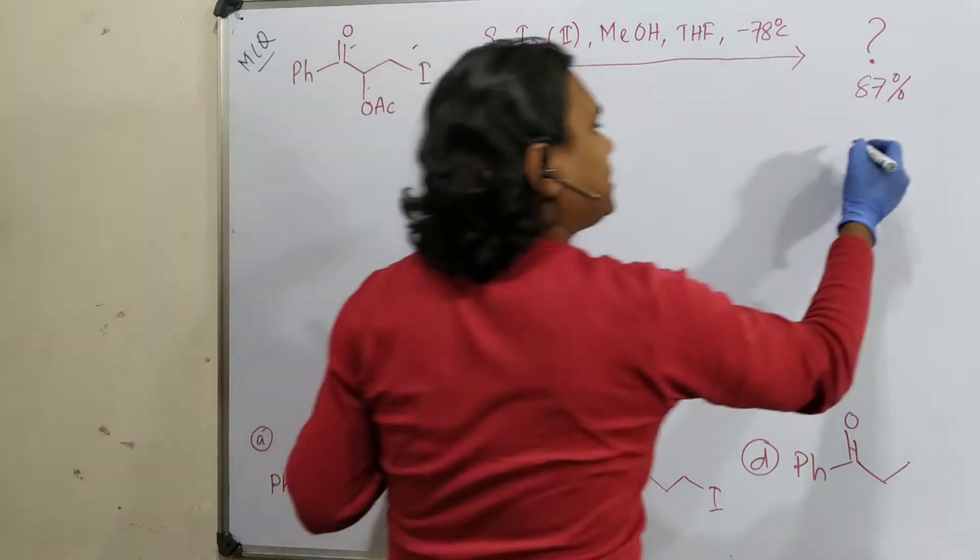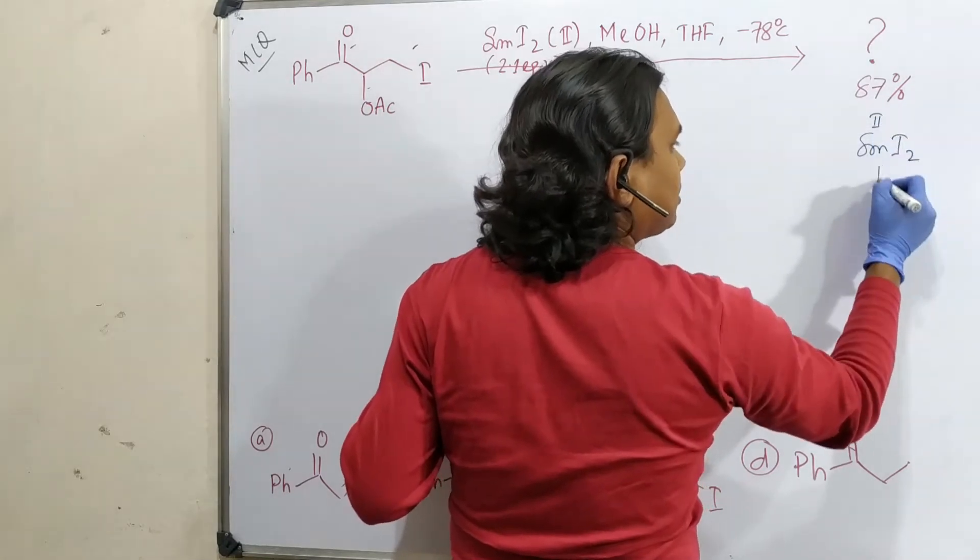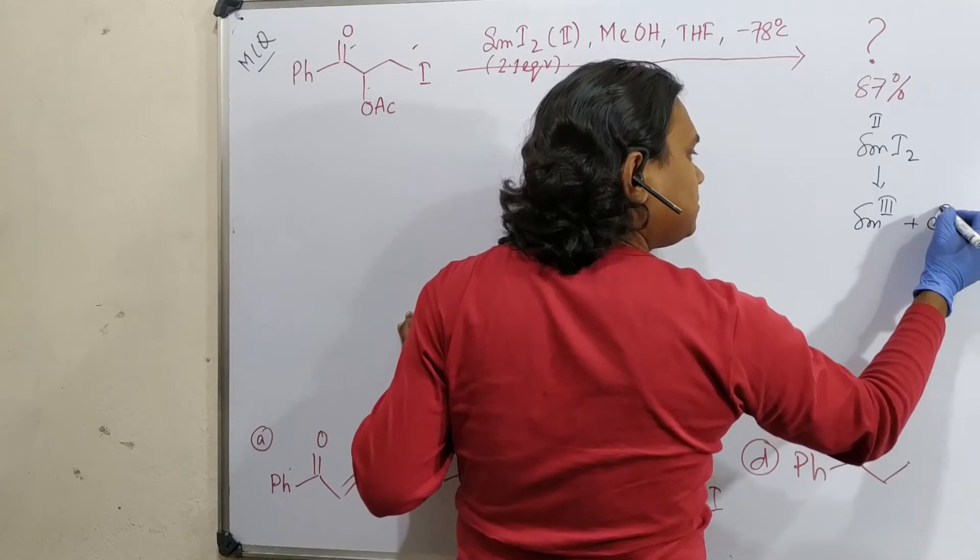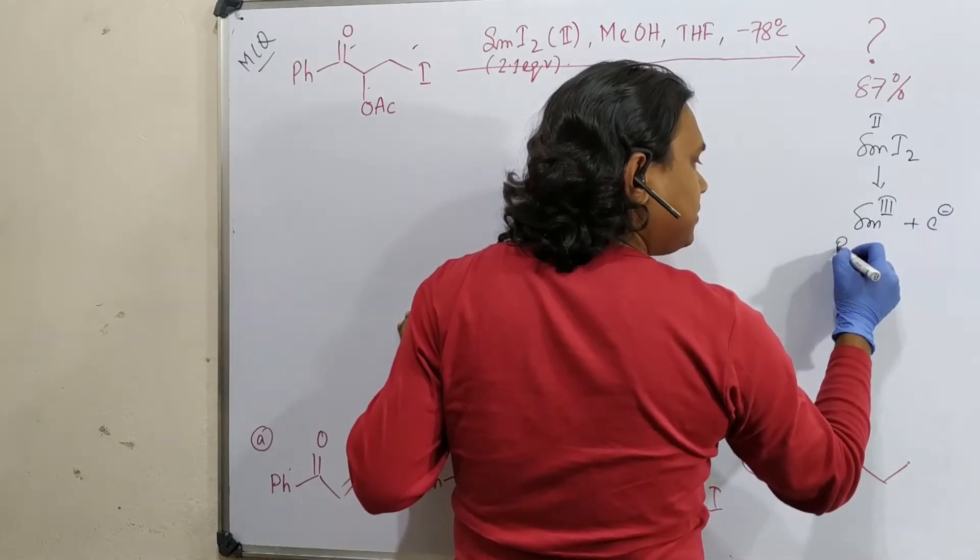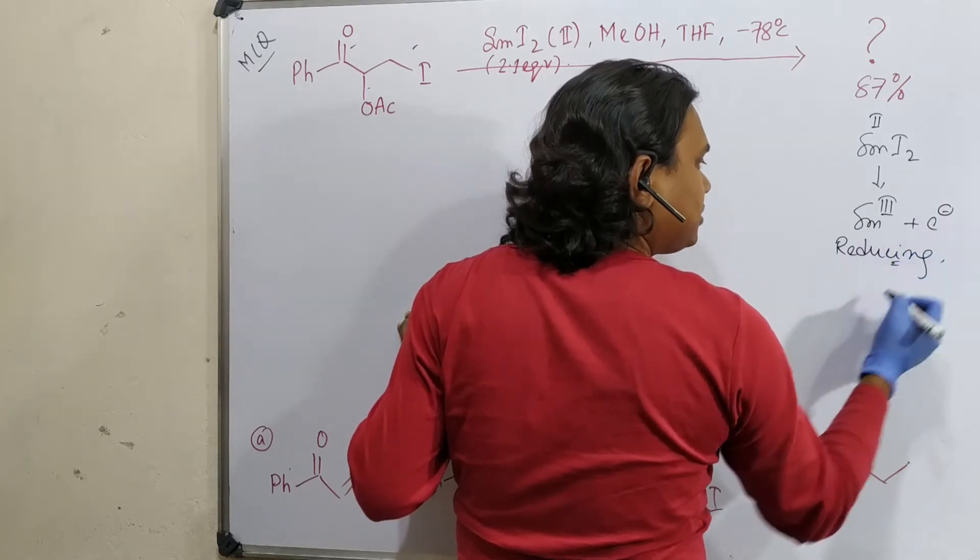Actually samarium iodide is a very famous one electron transfer reagent. Because it gives electron and becomes samarium three plus. So this is actually better to say reducing agent. And why it is so much efficient reducing agent?